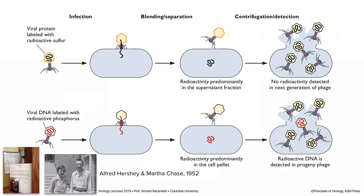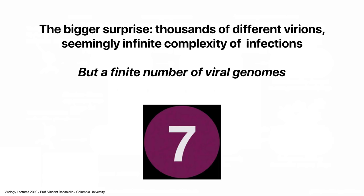This showed that DNA is the genetic material of this phage, and we now know this is the case for all living things — that either DNA or RNA is the genetic code. Something that will make our lives much easier throughout this course is that we can take thousands and thousands of different virus particles and distill them down into a finite number of genome types. In fact, seven. There are seven different genome types — think of the subway number seven.